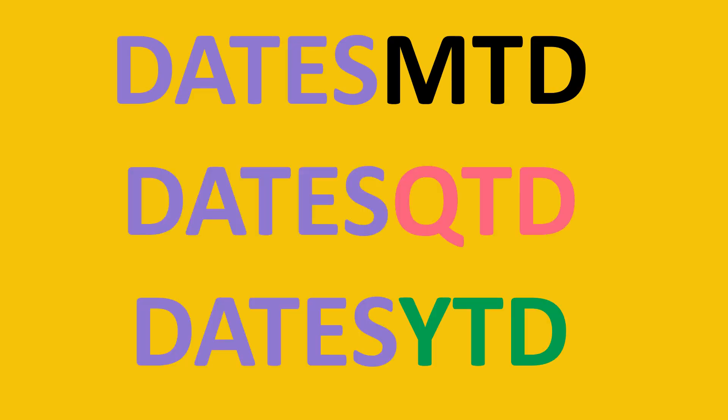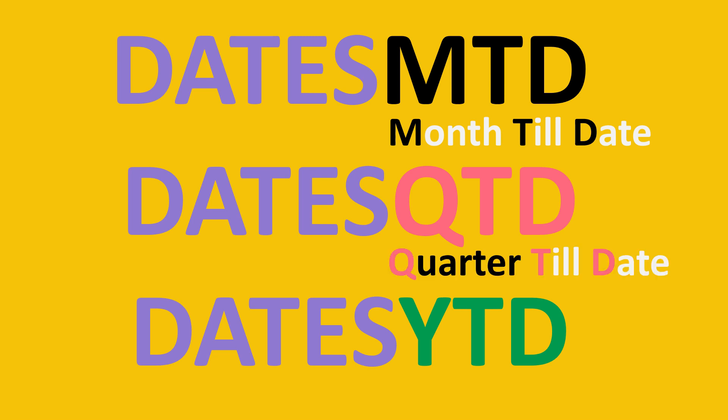Today we're going to have a look at dates MTD, QTD, and YTD. If you're wondering what these stand for: MTD stands for Month Till Date, QTD stands for Quarter Till Date, and YTD stands for Year Till Date. Now you might be asking what 'till date' means and what all these functions are going to do.